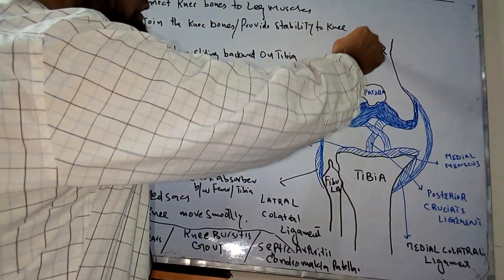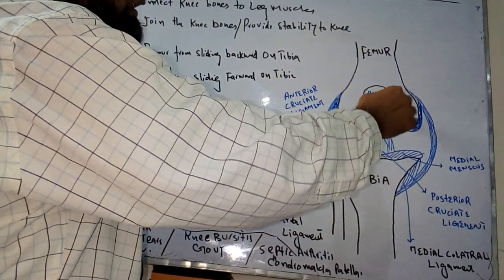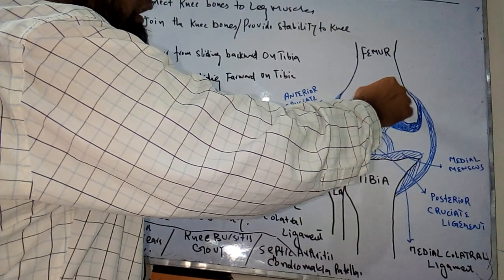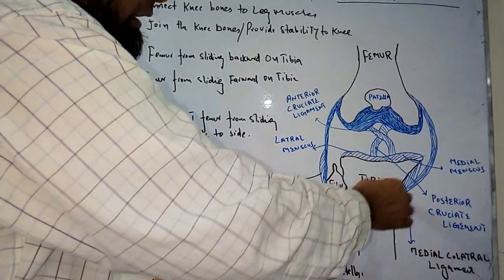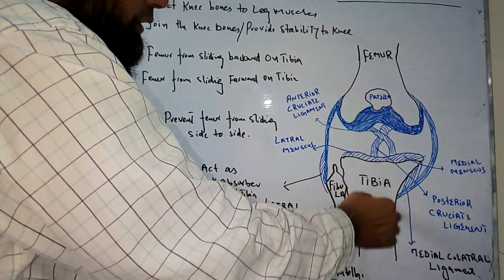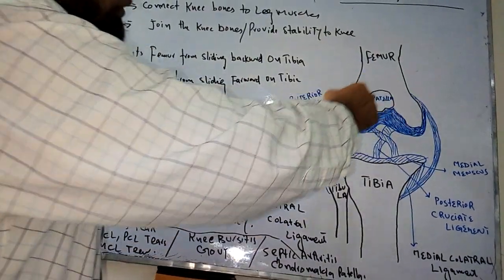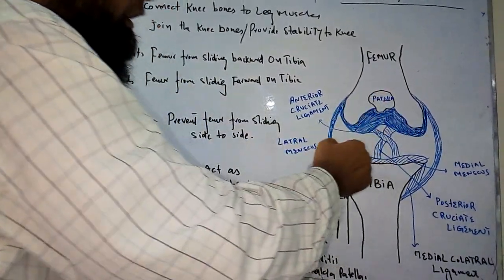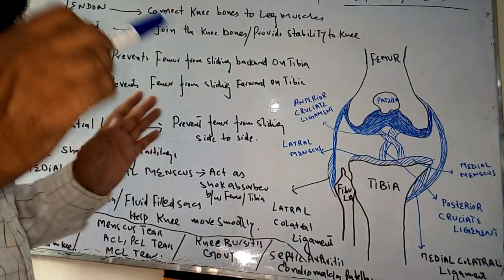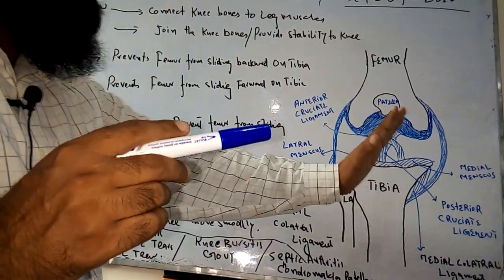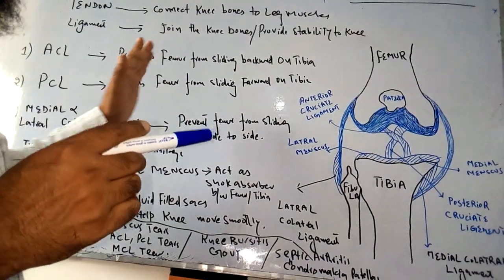Looking at the front, there is the patella, which is also called the kneecap. On the lower side are the tibia and fibula. This is the whole anatomy of the knee. Now we will discuss the function of each meniscus and ligament.